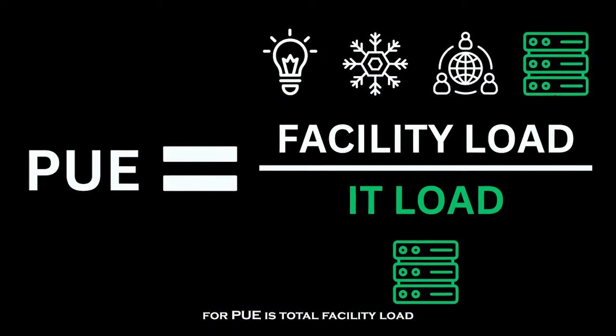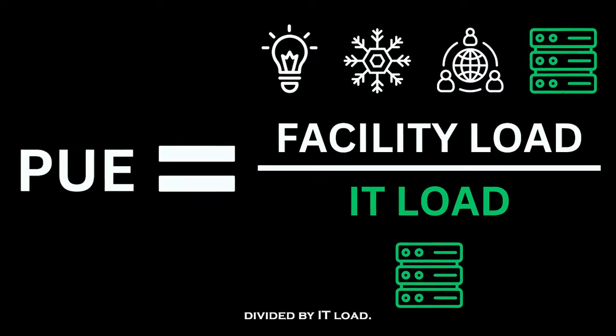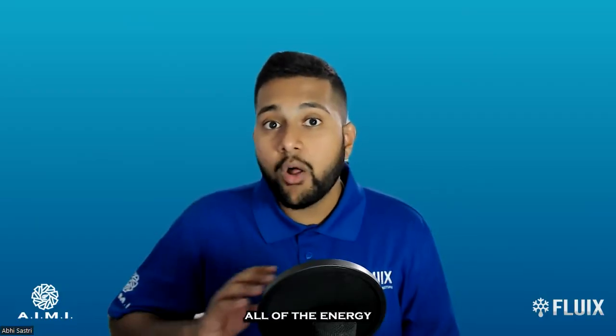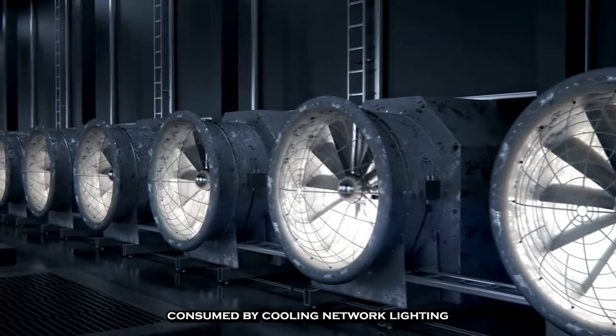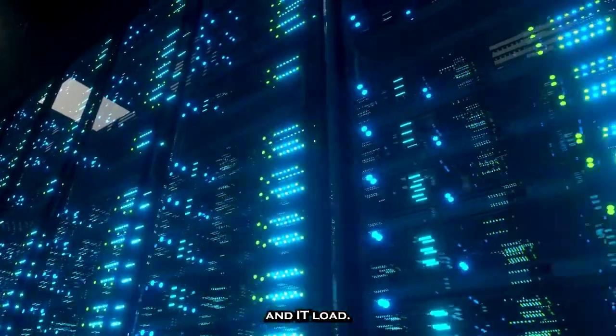The mathematical formula for PUE is total facility load divided by IT load. Total facility load includes all of the energy consumed by cooling, network, lighting, and IT load.